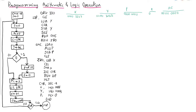Hello students, let's start our discussion. In this tutorial we will discuss programming arithmetic and logic operations. In the previous tutorial we discussed what is program loops. Here we will try to discuss the multiplication algorithm — the unsigned number multiplication algorithm.